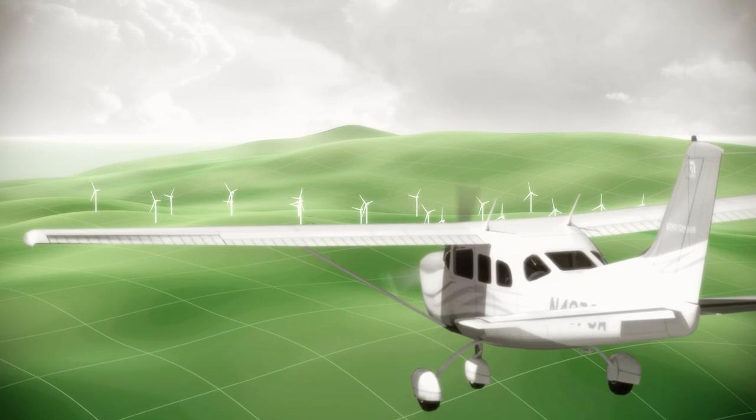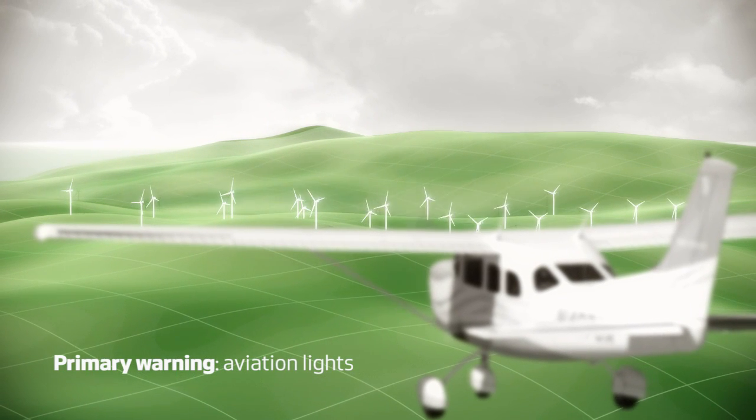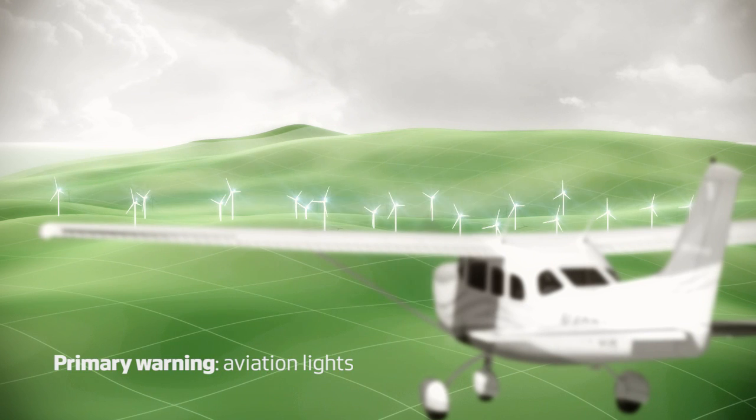If a warning is triggered, Ocus automatically activates the primary visual warning by switching on all the aviation lights in the wind farm.